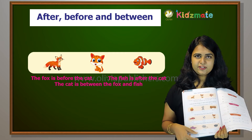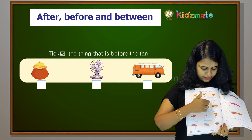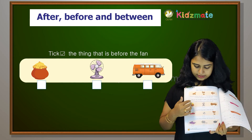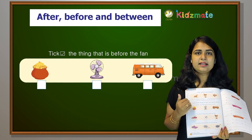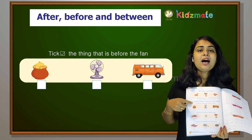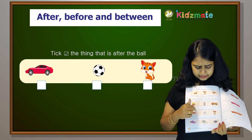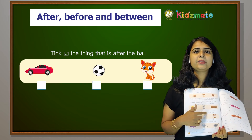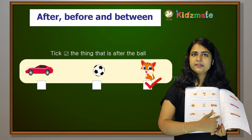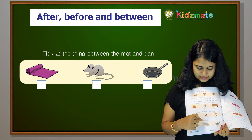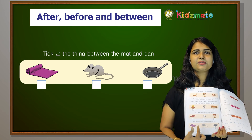Here we have a few things. The fan is before the cat. Ball is after. What is between the mat and pan? Mouse is there. So you have to find the mouse.